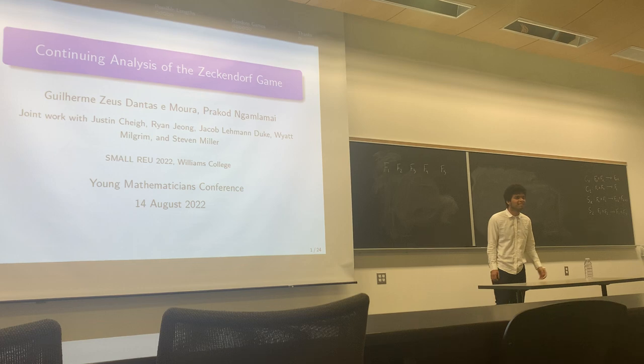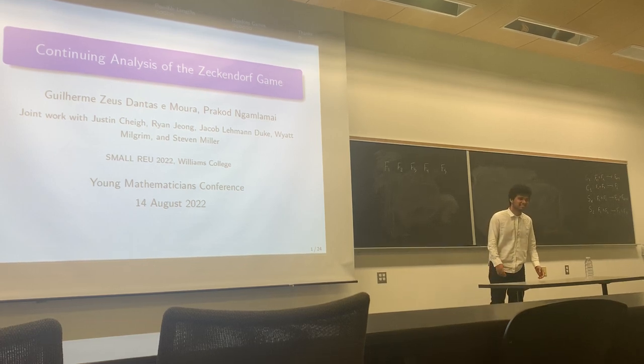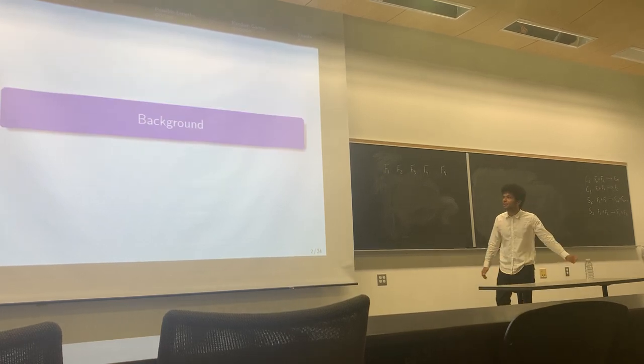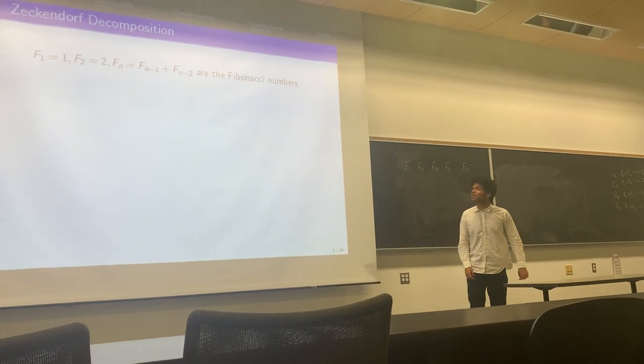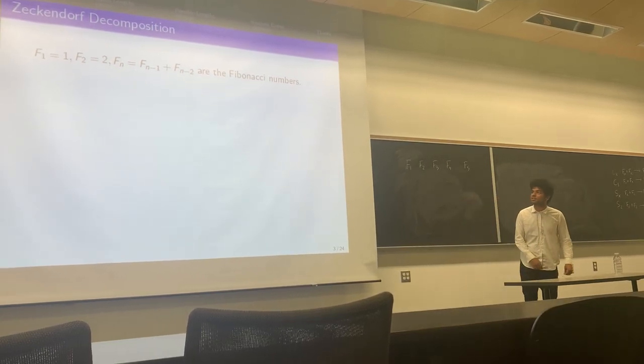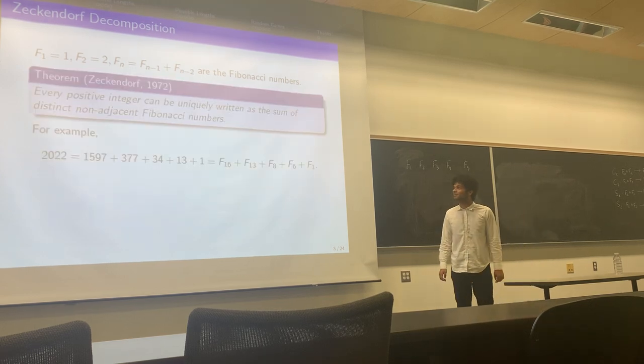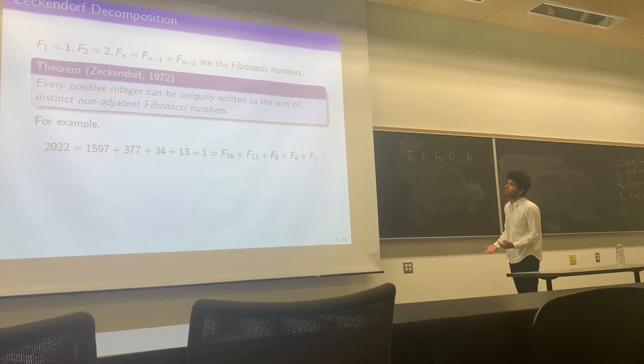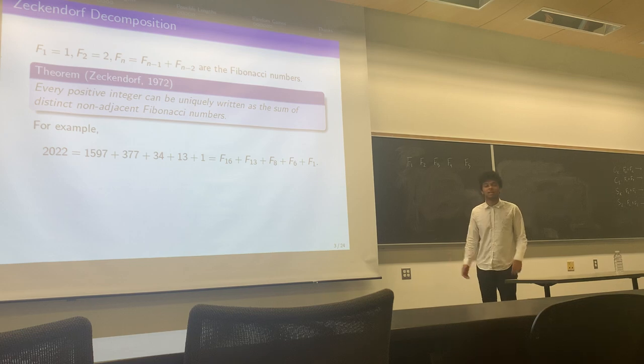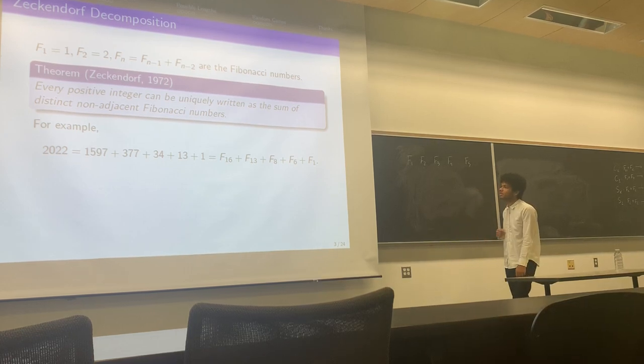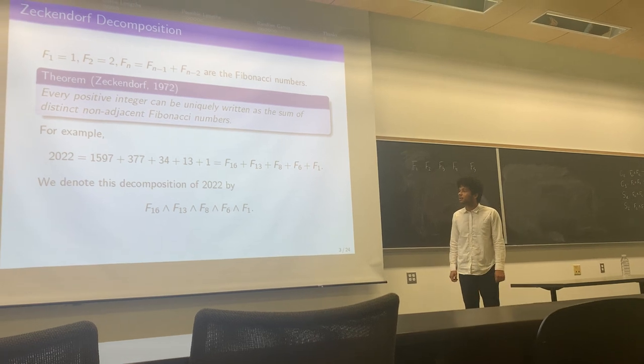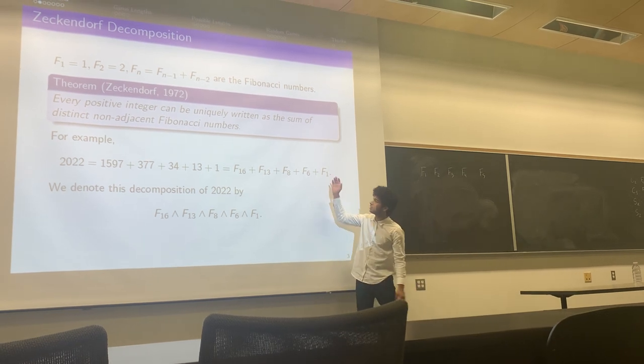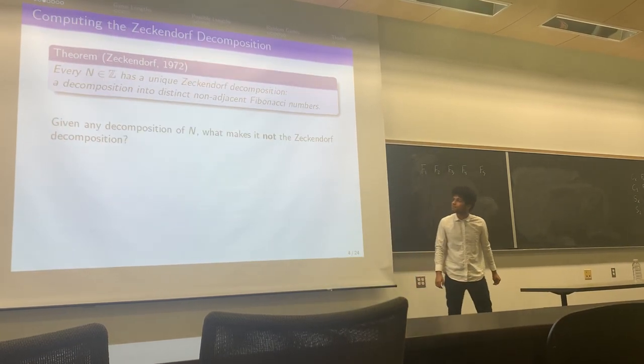Hello everyone. For the purpose of this talk, we're going to be labeling the Fibonacci numbers as F1 plus 1, F2 plus 1, and so on. By doing that, we have Zeckendorf's theorem, which says that every positive integer can be uniquely written as a sum of distinct non-adjacent Fibonacci numbers. For example, this year can be written as F16 plus F13 plus F8 plus F6 plus F1, and to distinguish this decomposition from the actual sum, we're going to write this decomposition changing the plus signs to 'and' signs.